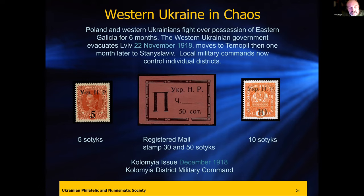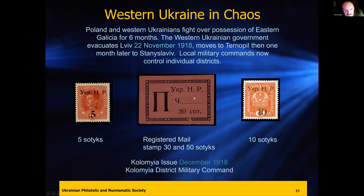After November 1st, the Western Ukrainian government started overprinting Austrian stamps. This is the Kolomea issue — a city in western Ukraine — with registration mail stamps in denominations of 30 and 50, in strips of five. Western Ukraine material is heavily forged and not cheap to buy — these are fairly expensive.